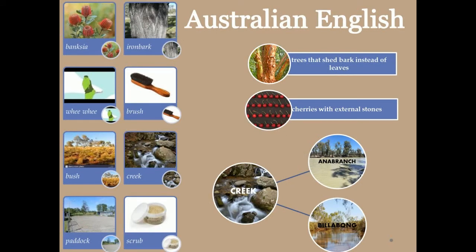More than 80% of the population is British in Australia. By the mid-20th century, with the rapid decline of its aboriginal tongues, English was without rivals in Australia.